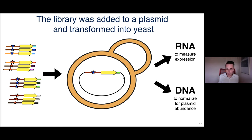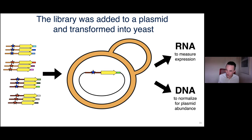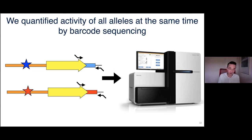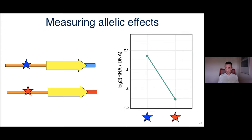We didn't clone them individually but in bulk. We did PCR, cloned them in front of the reporter, and added random-sequence barcodes behind the reporter gene. The abundance of these barcodes gives a readout of the activity of each promoter fragment. We had multiple barcodes per oligo for statistical robustness.